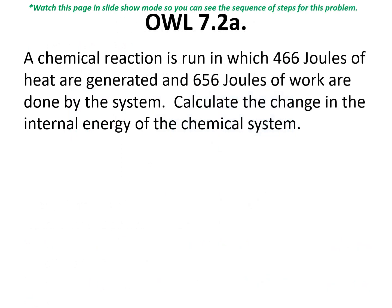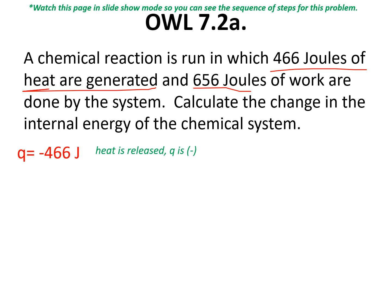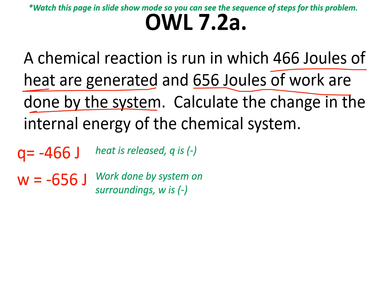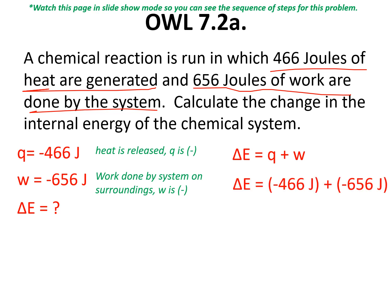Let's look at a calculation involving the internal energy of a system. We have a chemical reaction that releases 466 joules of heat — 'released' tells us the heat value is negative. We're also told that 656 joules of work are done by the system, meaning work is done on the surroundings, so the work value is also negative. To calculate the change in internal energy, we use delta E = Q + W. Plugging in the values, delta E equals negative 1,112 joules.